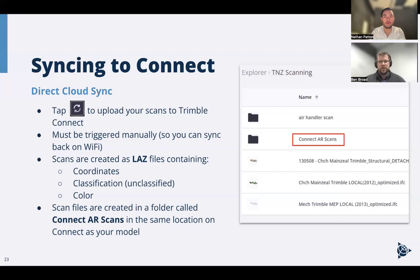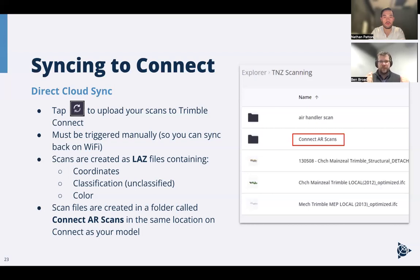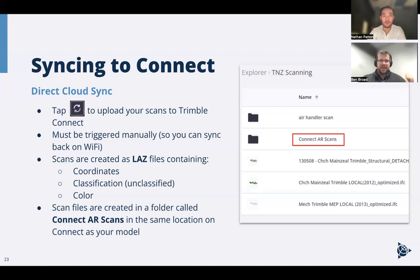There's not actually any post-processing that happens on Trimble Connect — it's just a collaboration platform where all the data gets sent, accessed, and moved on from. In the LAZ file, the coordinates are baked in — either geo-referenced or not, depending on the workflow used. The classification of those points is all unclassified, and they come in with color by default. Scans are created in a folder called 'Connect AR Scans' in exactly the same location on Connect as your model. You can be out in the field scanning, do the scan, save it, sync it, and it'll literally be up on Trimble Connect in a minute.